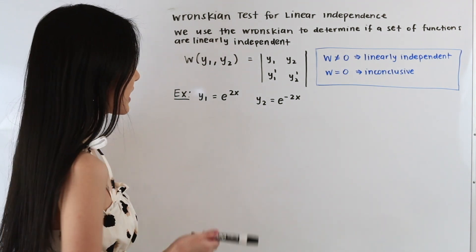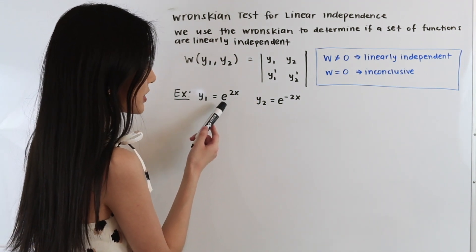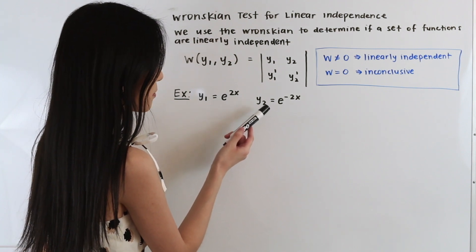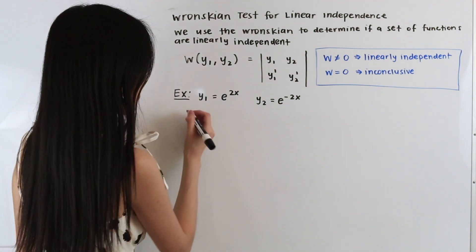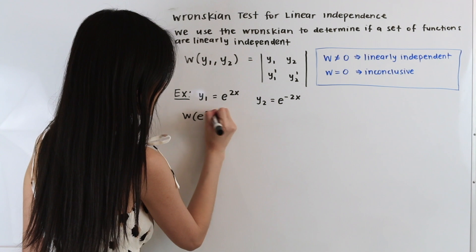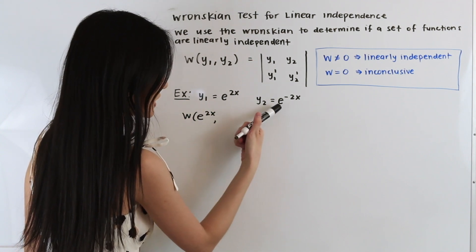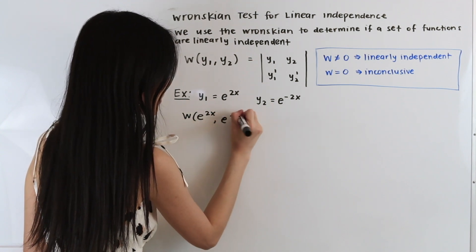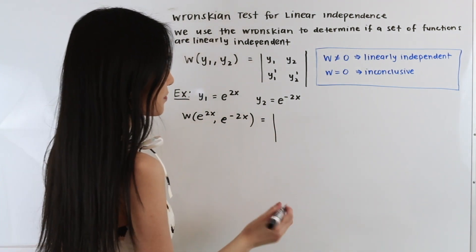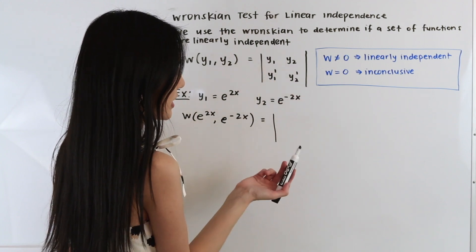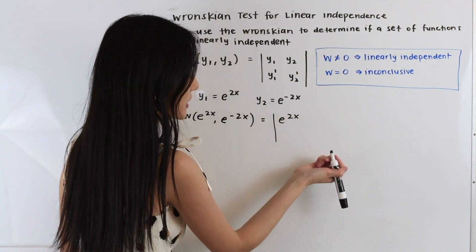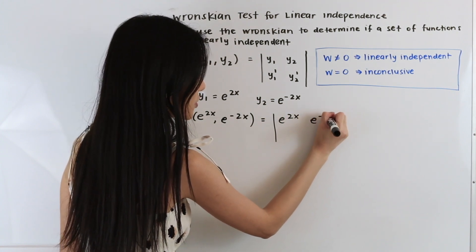In this first example, we have y1 equal to e to the 2x and y2 equal to e to the negative 2x. Let's go ahead and plug this into our formula for the Wronskian. So we have the Wronskian of y1, which is e to the 2x, and y2, which is e to the negative 2x. This is equal to the determinant of the matrix with y1 and y2 in the first row — so e to the 2x and e to the negative 2x.